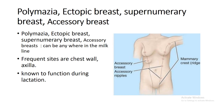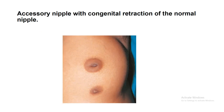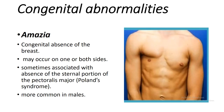Developmental labral abnormalities include polymasia — also called ectopic breast, supernumerary breast, or accessory breast — which is the most common breast developmental abnormality. Accessory breast can be located anywhere along the milk line, but the commonest location is the axilla or chest wall, and it also functions during lactation and pregnancy. Other abnormalities include accessory nipple, congenital inverted nipple, and amasia, where there is absence of the breast.